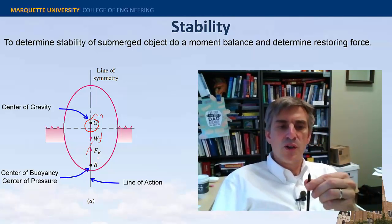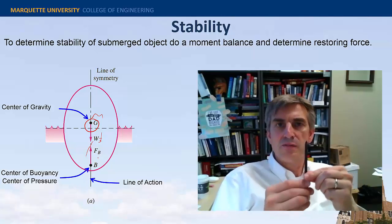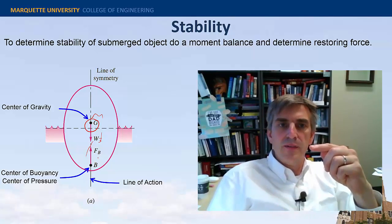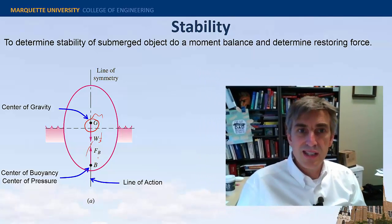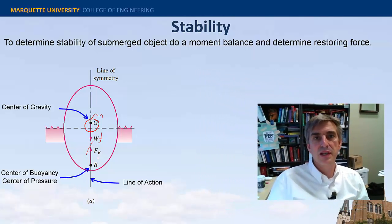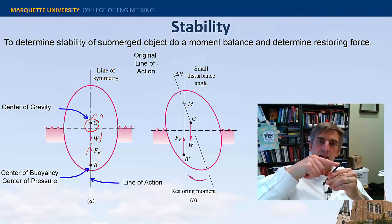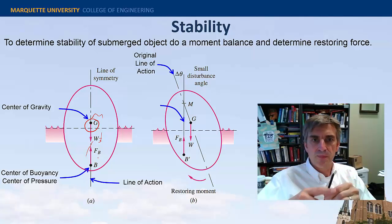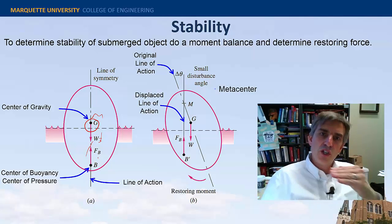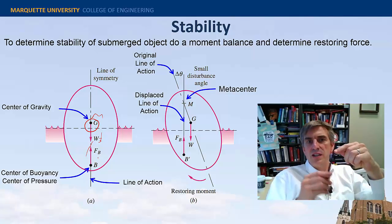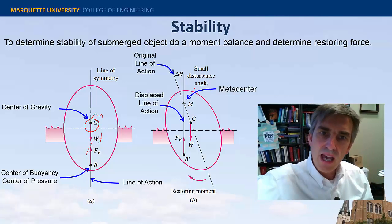The buoyancy force also acts along a vertical line until it hits the free surface, and that line is called the line of action, which in this case happens to be lined up to the line of symmetry of the egg. Now, if I displace this little egg an amount delta theta, you can see that the buoyancy force shifts over to the left, and its new line of action intersects the old line of action at this point M, the metacenter.